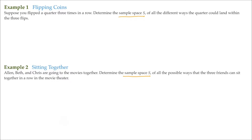So for this first example, we have flipping coins. Suppose you flipped a quarter three times in a row. Determine the sample space S of all the different ways the quarter could land within the three flips. One thing we want to do is use a letter to designate any particular result. So if I flip a head, I'll label it with an H. And if I flip a tail, I'll label it with a T. So then the sample space, we'll label it S, and we start off with a curly brace — a curly brace shows that it is a set.